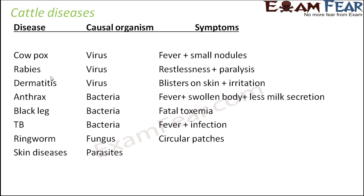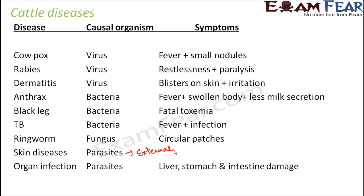Various skin diseases in cattle occur due to parasites. Most skin diseases are caused by external parasites like ticks or lice, which remain on the surface or skin of the animal. Certain parasites are internal — present inside the body of the organism. Parasites live in the body of another organism, take nutrition from it, and also harm it. External parasites like lice or ticks live on the outside; internal parasites live inside organs like the liver or stomach.